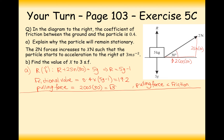For part B, the 2 newton force increases to x newtons such that the particle starts to accelerate to the right at 3 metres per second squared. Calculate the value of x to three significant figures. Now all the 2s become x in our diagram and equations.